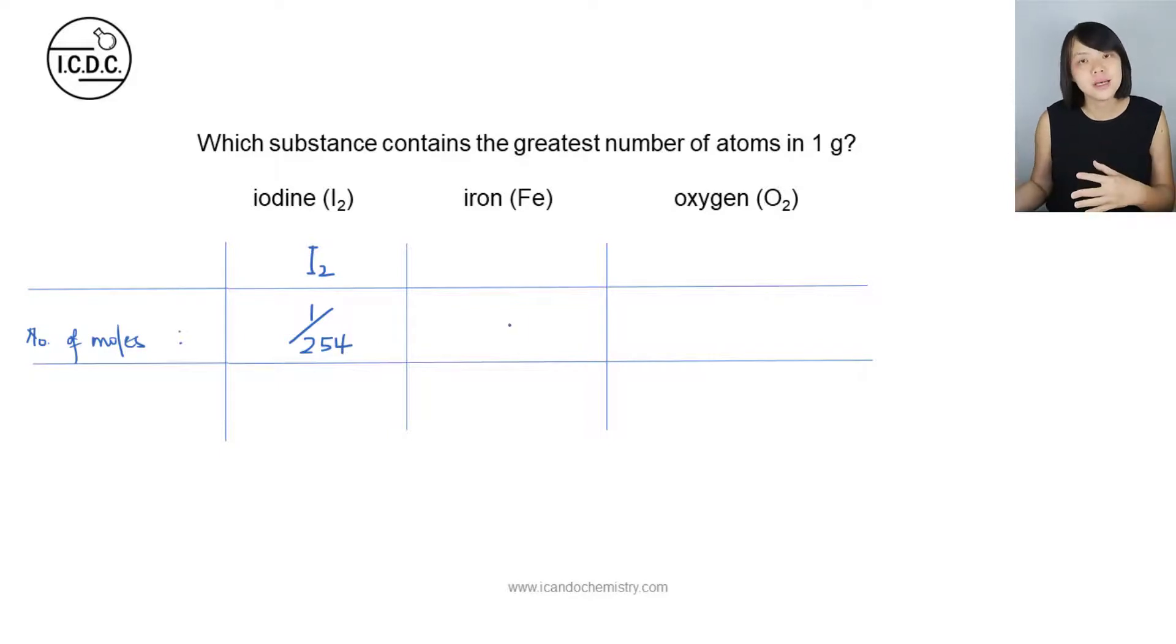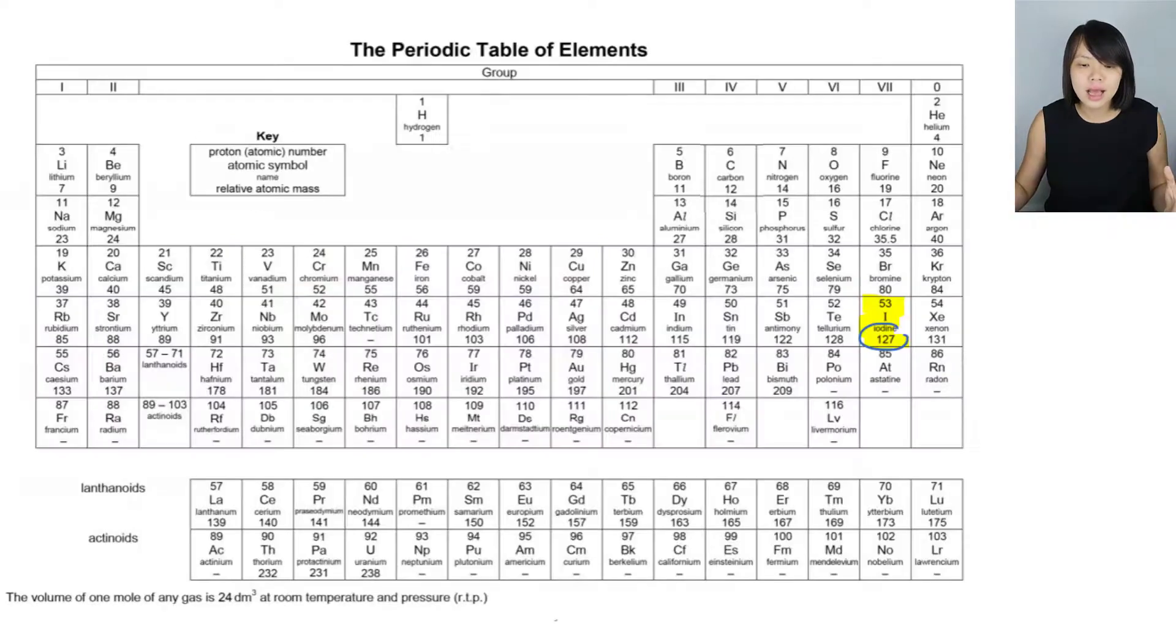What about the next substance, iron? Now iron, it is a metal. Now metals, they exist as atoms. Iron is over here. So what is the relative atomic mass? It is actually 56.